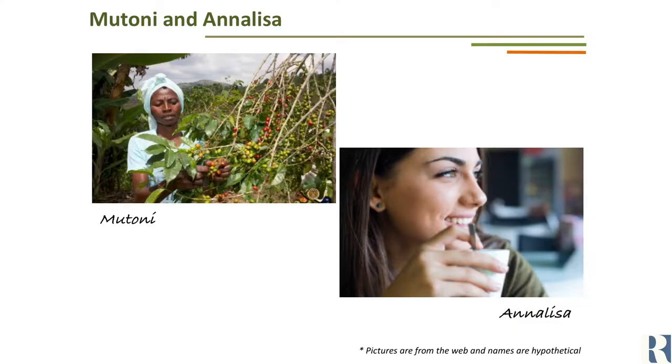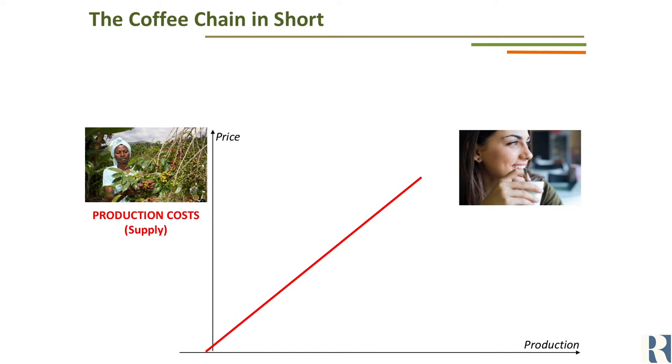In the next 15 minutes, I'm going to talk about a special relationship — the relationship between Muttoni and Annalisa. Muttoni is a young, hard-working mother of three living in Maraba, in the southern part of Rwanda. Annalisa is also young and hard-working. She left Italy to complete her master's degree in London, and now she's looking forward to a career filled with purpose. During her degree she has met many people from different cultures and backgrounds, and over countless cups of coffee, she has discussed ways to make the world a better place. Now she's drinking coffee that has been carefully harvested by Muttoni. Muttoni and Annalisa are connected by the coffee supply chain.